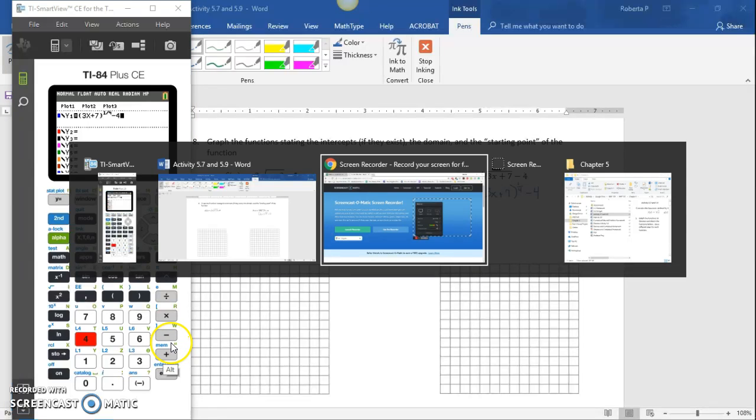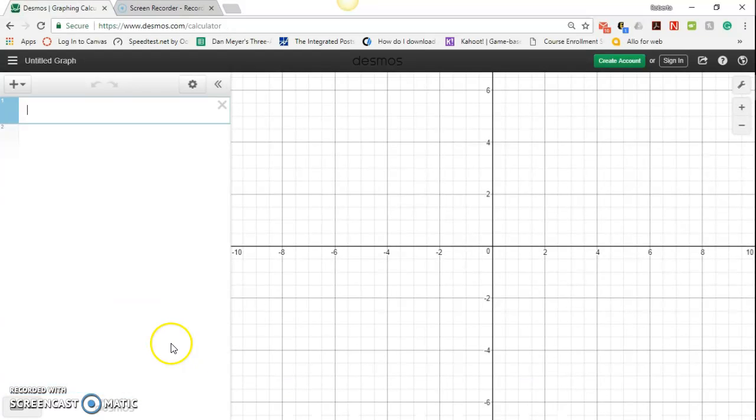If you're using Desmos, you do something similar. Type f(x) equals parentheses 3x plus 7, use the right arrow key to get outside the parentheses, then raise to 1 divided by 4, right arrow key again, and then minus 4.